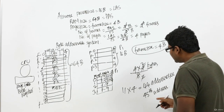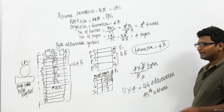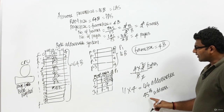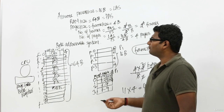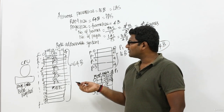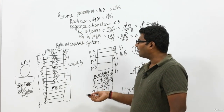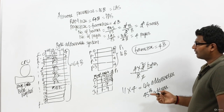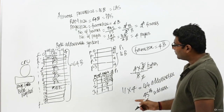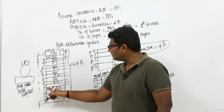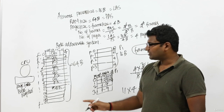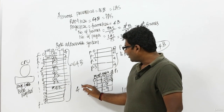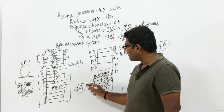Now what is the 45th address inside our RAM? We start addressing from zero, so the 45th address is nothing but 44. Therefore, the page table of P1 is placed at address 44.